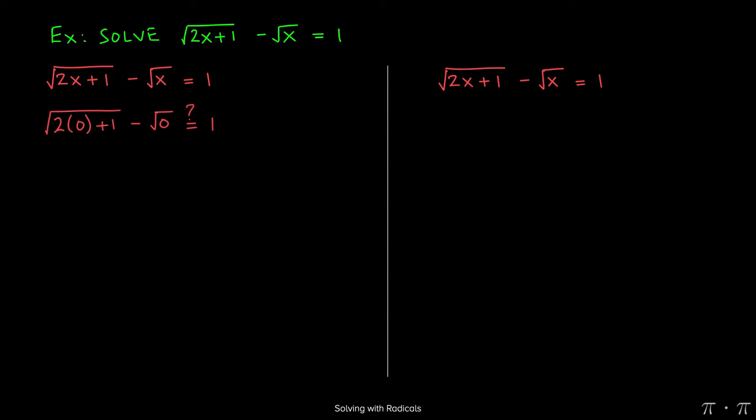First on the left-hand side, I'm going to plug in 0. So 2 times 0 plus 1 minus the square root of 0 may or may not equal 1. That's what we're trying to determine. 2 times 0 is simply 0. On the left-hand side, 0 plus 1 just gives us 1. Everything else stays the same. The square root of 1 we recognize is just 1, and the square root of 0 is simply 0. 1 minus 0 gives us 1.